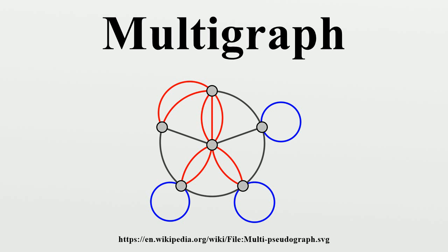A multigraph is different from a hypergraph, which is a graph in which an edge can connect any number of nodes, not just two. For some authors, the terms pseudograph and multigraph are synonymous. For others, a pseudograph is a multigraph with loops.